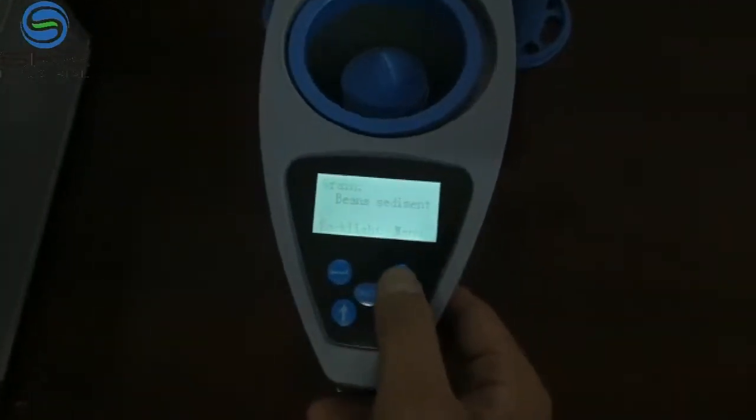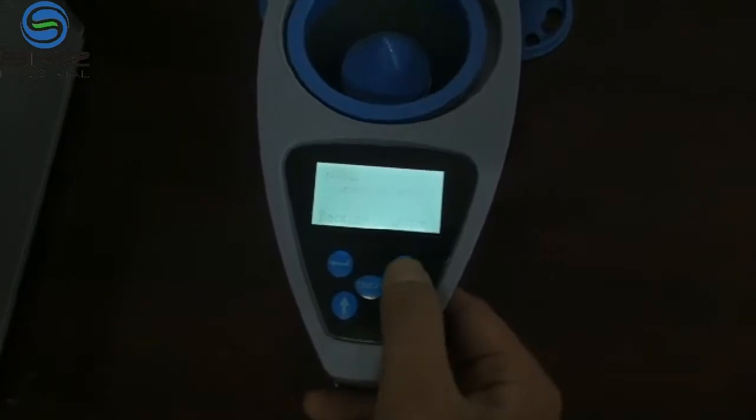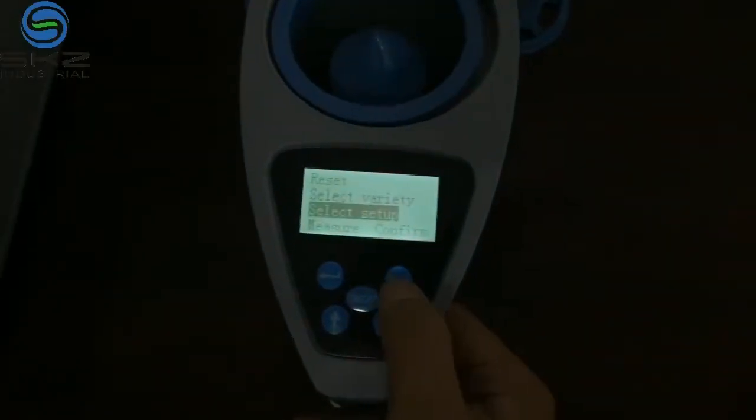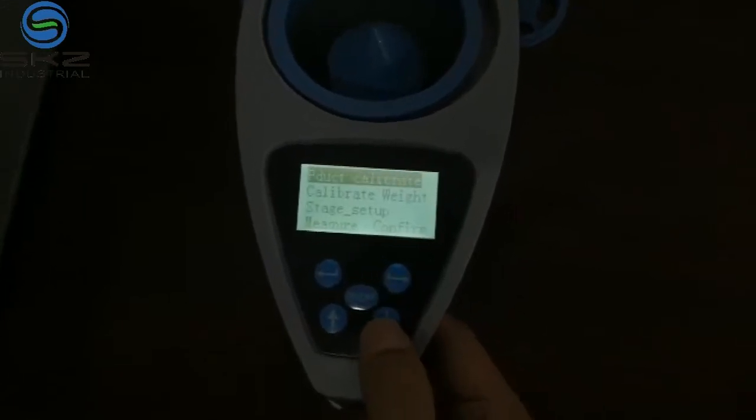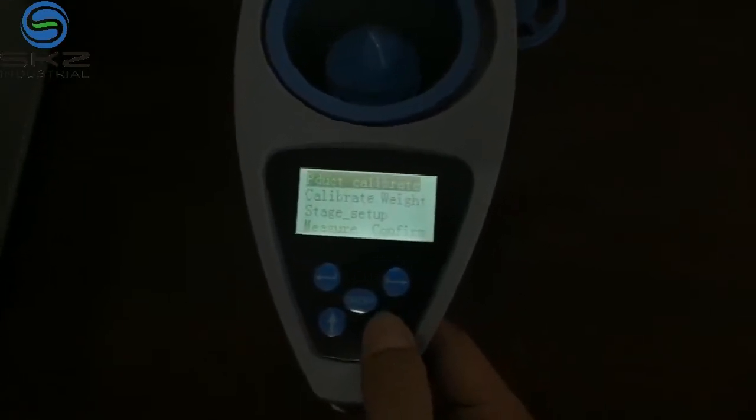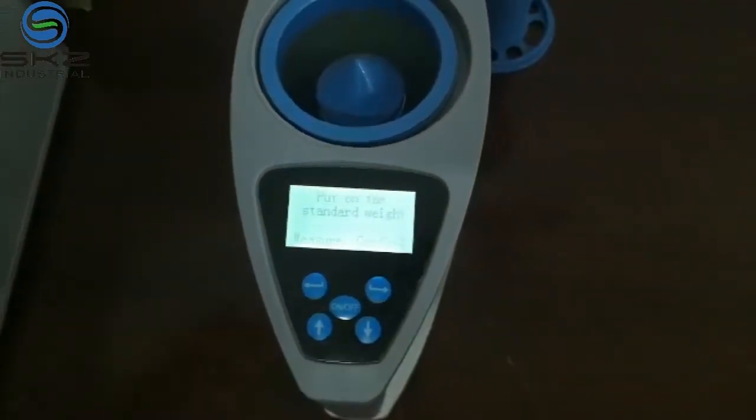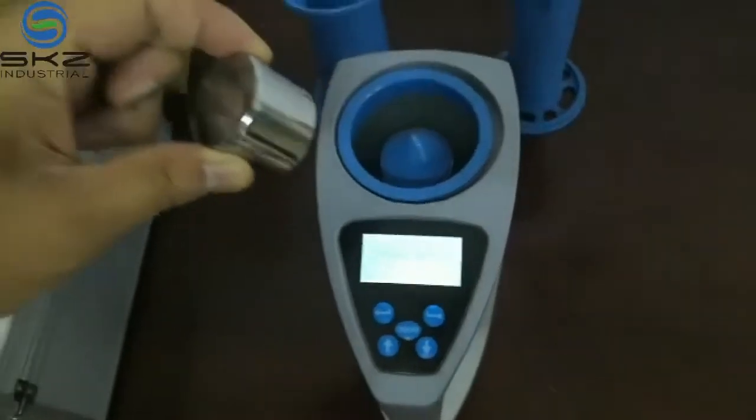First I press menu and select setup, and calibrate weight. Then press confirm. Then put the calibration weight. This is 200 grams.